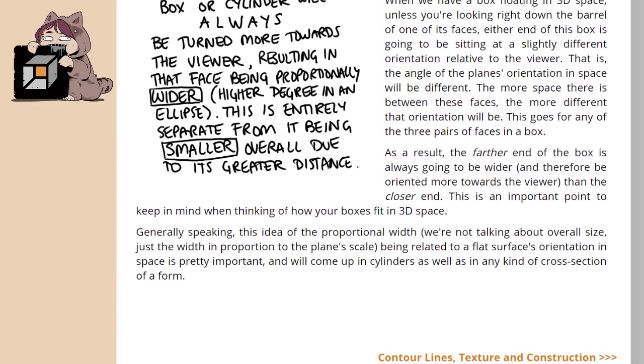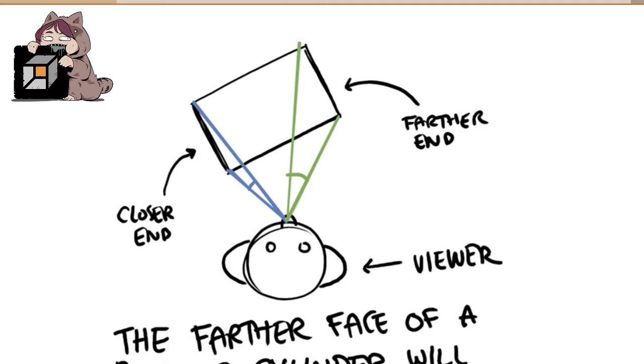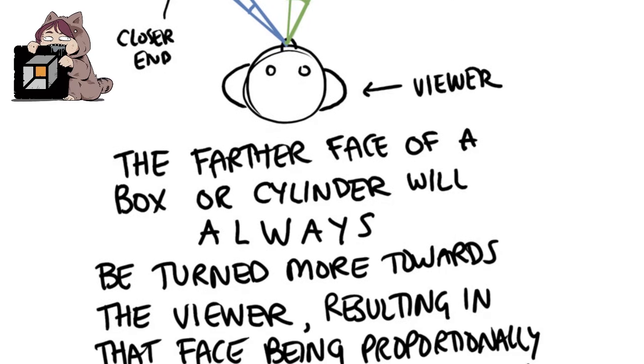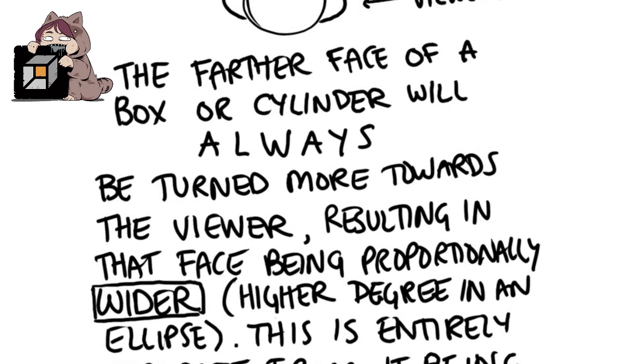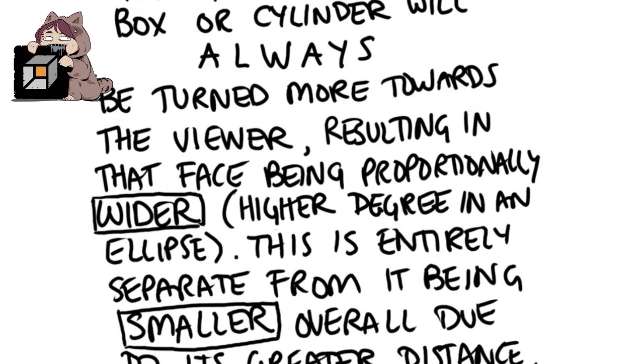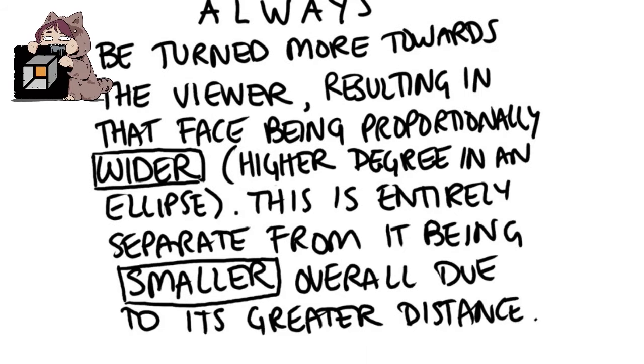As a result, the farther end of the box is always going to be wider and therefore be oriented more towards the viewer than the closer end. This is important to keep in mind when thinking of how your boxes fit in 3D space. Generally speaking, the idea of the proportional width - we're not talking about overall size, just the width in proportion to the plane's scale - being related to a flat surface's orientation in space is pretty important and will come up in cylinders as well as any kind of cross-section of a form. The farther face of the box or cylinder will always be more turned towards the viewer, resulting in that face being proportionally wider, or a higher degree in an ellipse. This is entirely separate from it being smaller overall due to its greater distance.